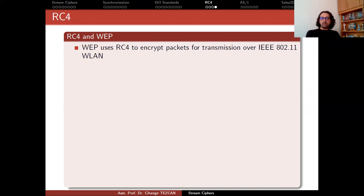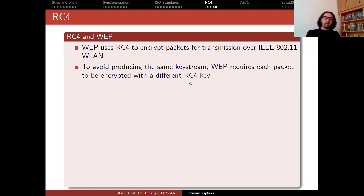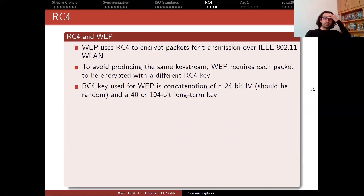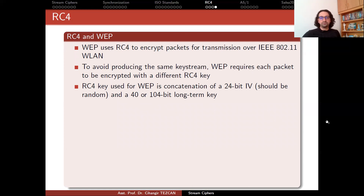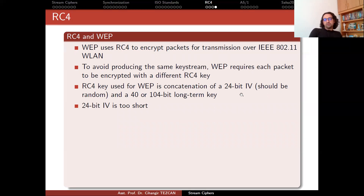WEP uses RC4 to encrypt packets for transmission over IEEE 802.11 wireless LAN standards. To avoid producing the same key stream, WEP requires each packet to be encrypted with a different RC4 key. The RC4 key used in WEP is a concatenation of a 24-bit initialization vector, generated randomly, and a long-term key that can be as short as 40 bits and as long as 104 bits. However, a 24-bit IV is short, so after generating enough keys it must repeat — you can have at most 2 to the 24, about 16 million, different initialization vectors.